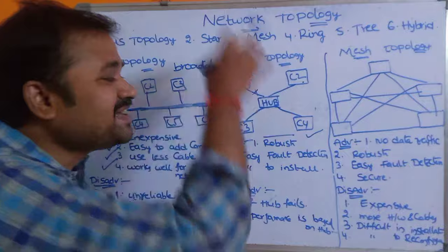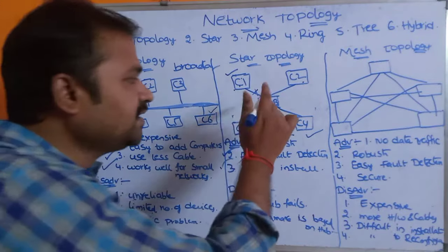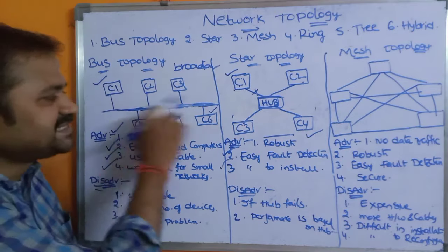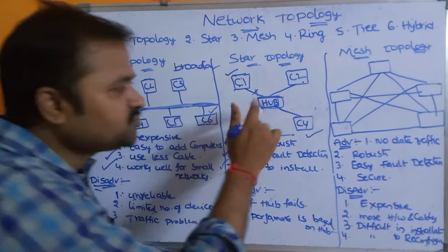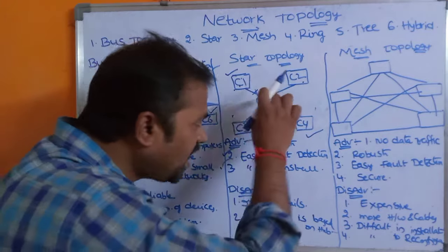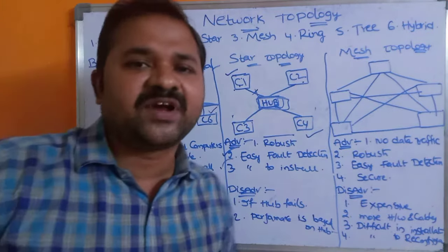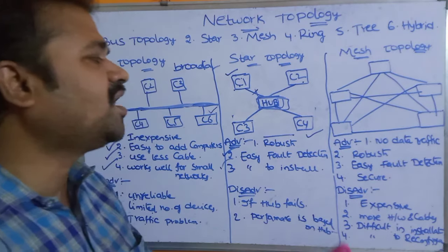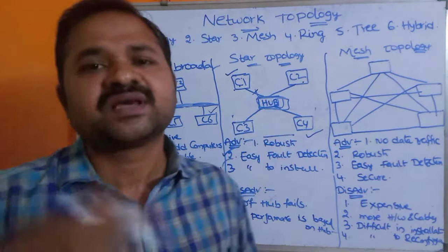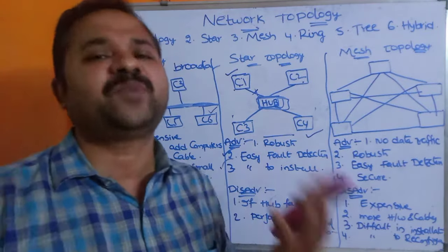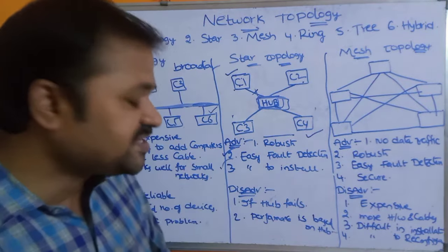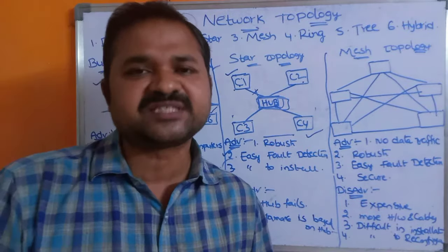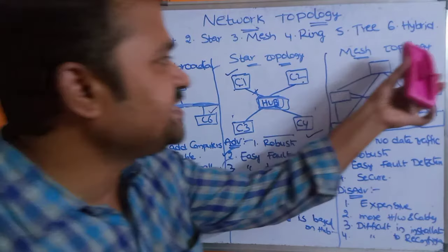The drawbacks of star topology: if the hub fails, the entire network fails — the hub is critical, just as the cable is critical in bus topology. Additionally, performance depends on the hub: if the hub performs well, the network performs well; if the hub has lower performance, the entire network suffers.